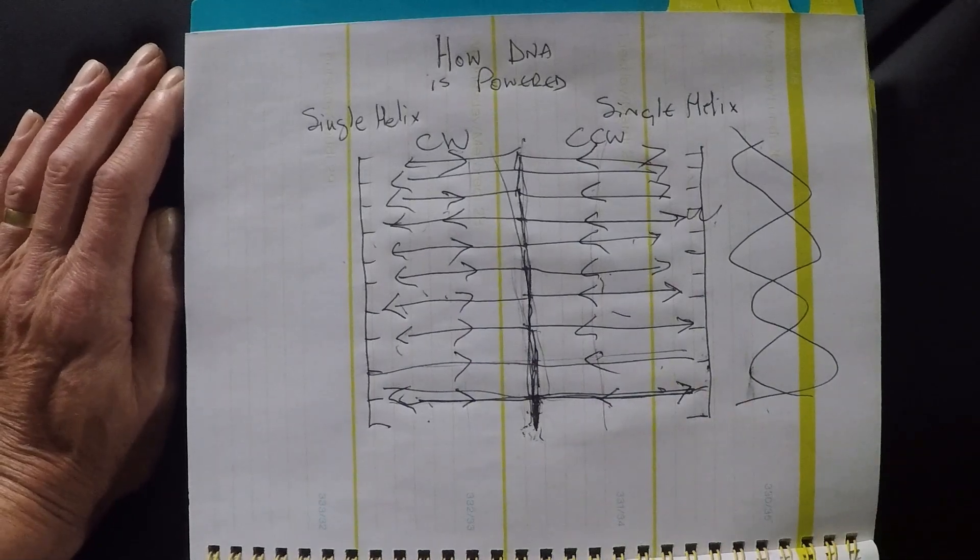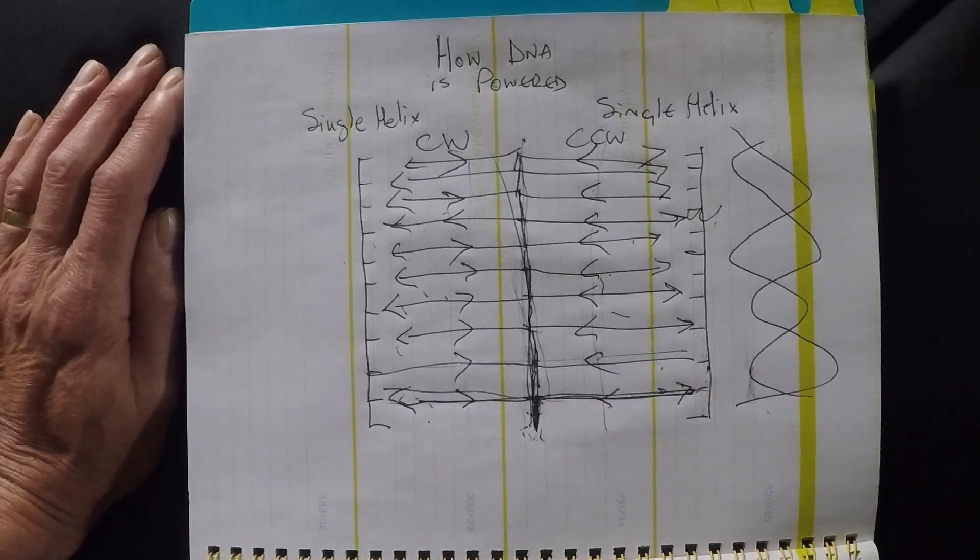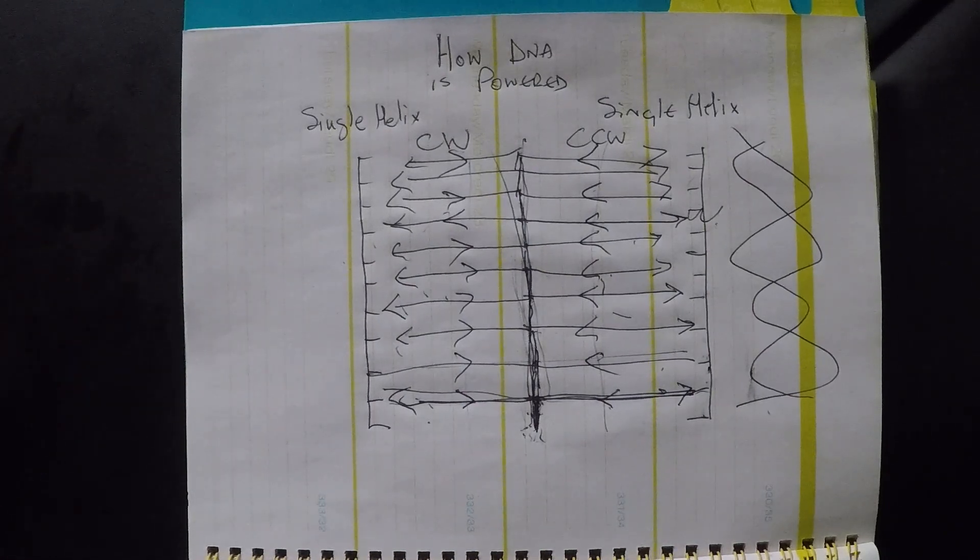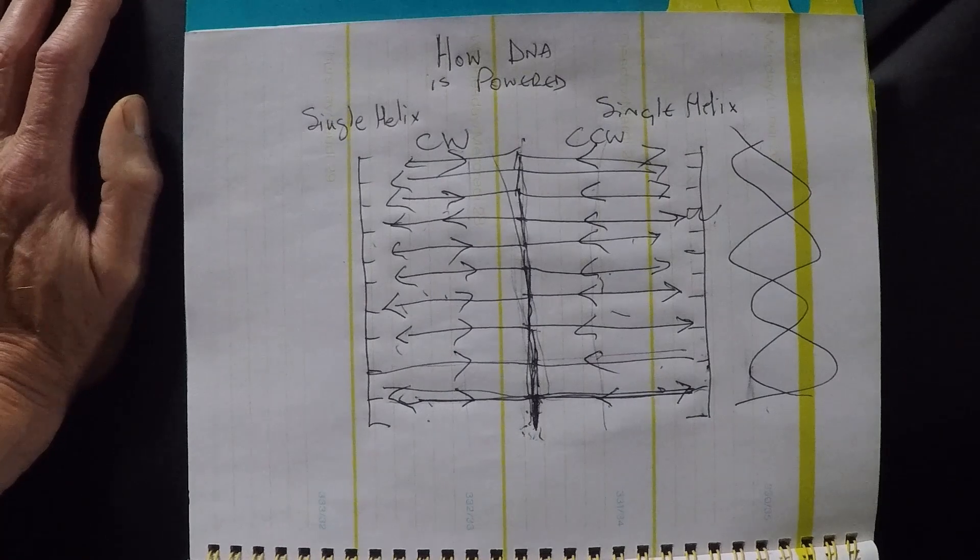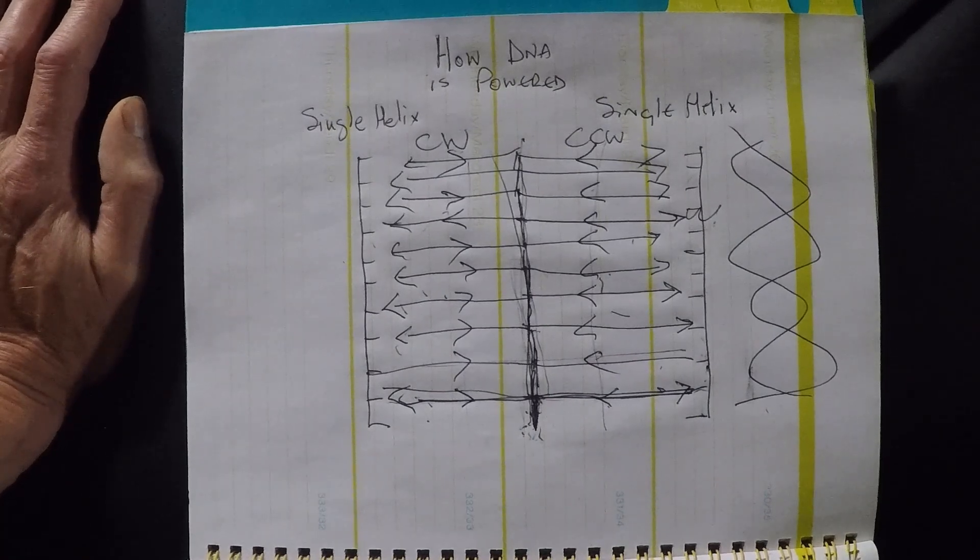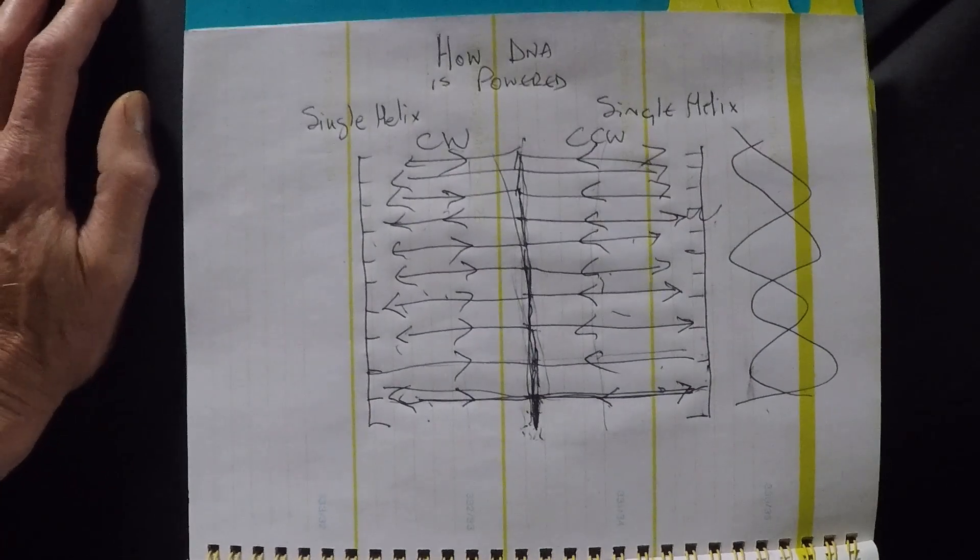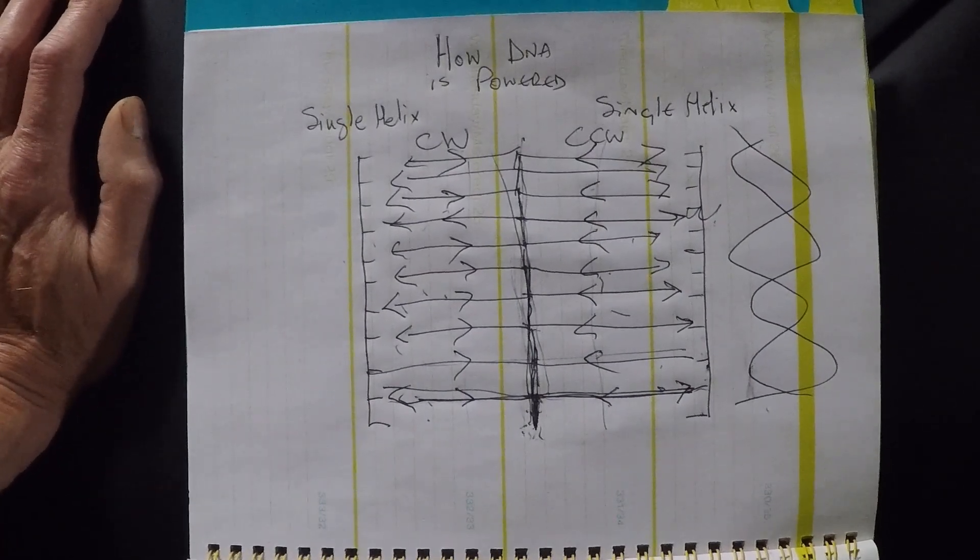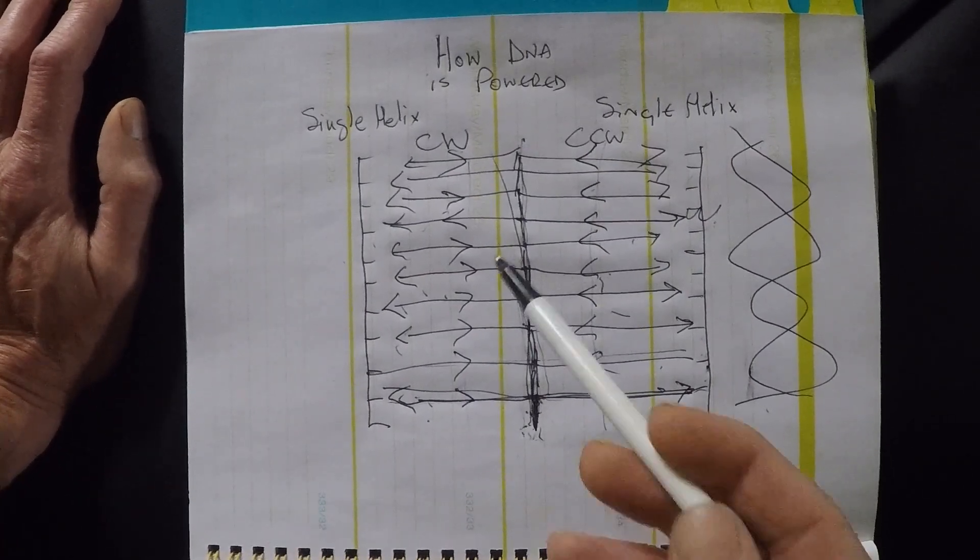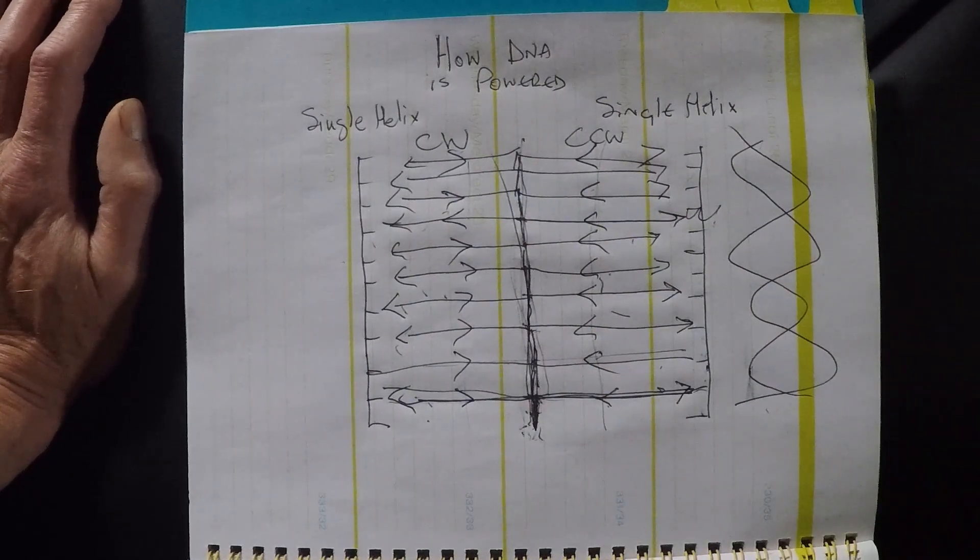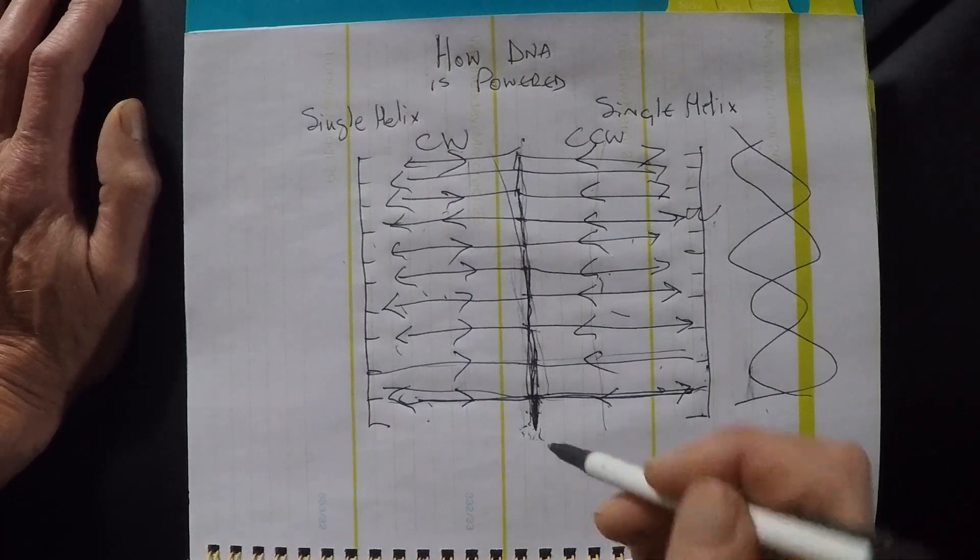I don't believe anybody has ever explained how DNA pulls itself together because obviously science is not a big believer in electricity and magnetism when it comes to actually moving matter. But that's the thing, you see. Matter is dead. Matter doesn't do anything. Matter is merely a code that energy turns into a shape. So there we have it.